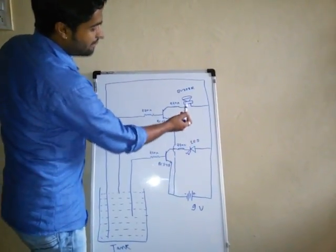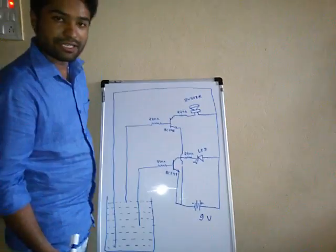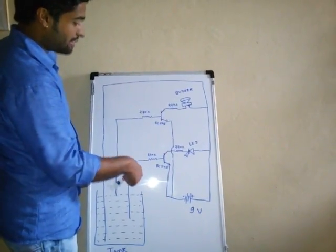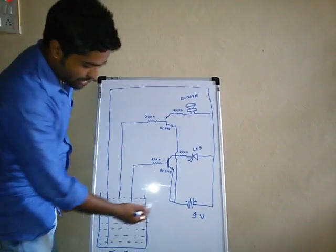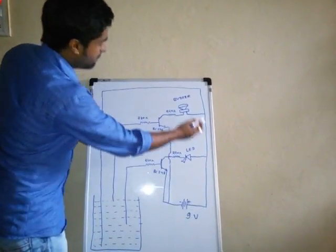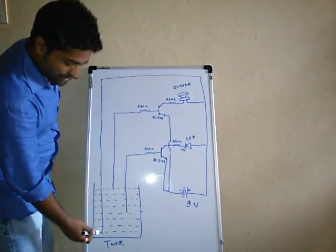And we are taking one LED, one buzzer and one 9 volt battery. These components are basically required for this project. And the positive terminal of 9V battery is connected with the tank.